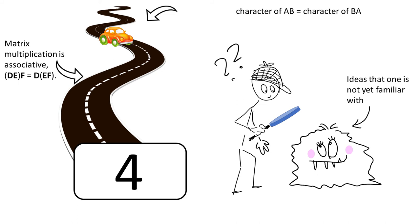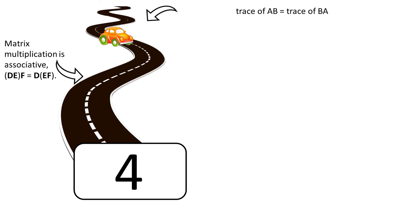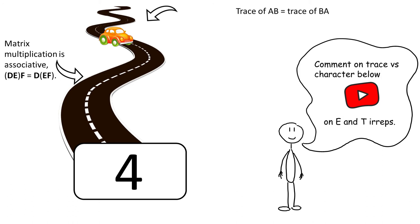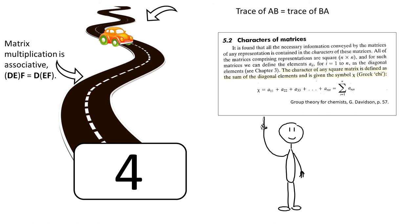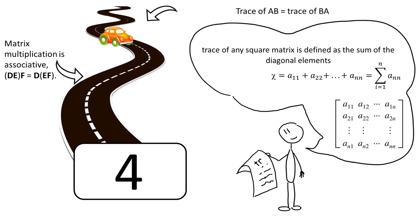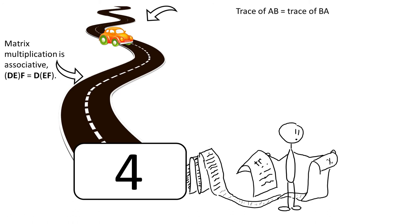The second thing that we need is that a character of AB equals character of BA. Just a side note, if you want to explore a little bit more on your own, you will find this property under trace of AB equals trace of BA. And I wrote a comment about the difference between trace and character under the video on E and T representations. The term character is good in the context of what we do, and that is what Davidson does as well. But there is a distinction. Basically the sum of all the diagonal terms in any square matrix is called trace. The definition of character that I found is that in mathematics, more specifically in group theory, the character of a group representation is a function that associates to each group element the trace of the corresponding matrix.